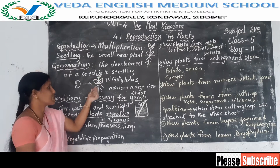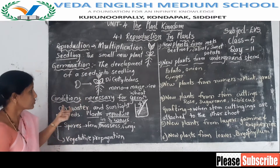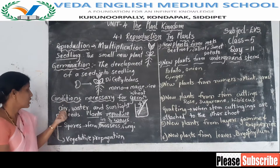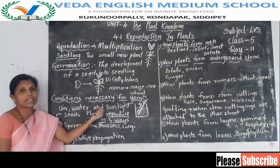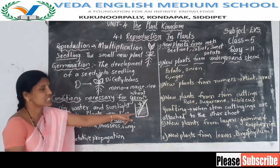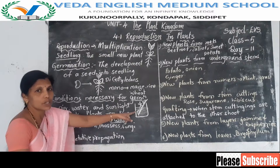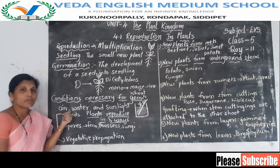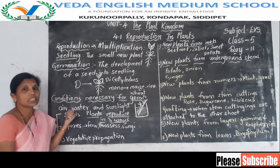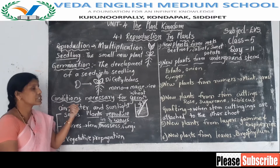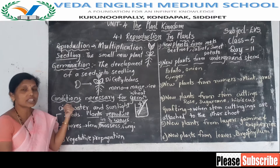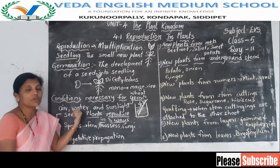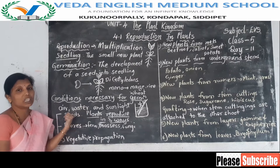The baby plant gets its food from the seed leaves until it gets a pair of leaves. What are the conditions necessary for germination? Air, water, and sunlight. Do this activity at home also. For the germination of a seed, all these conditions are necessary. If the seed does not get any one of these, it will not germinate.